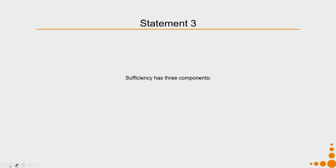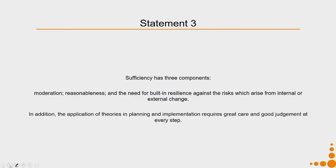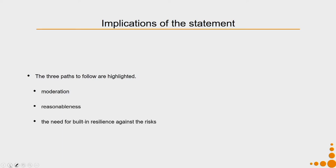Statement three says: sufficiency has three components — first, moderation; second, reasonableness; and third, the need for built-in resilience against the risks which arise from internal or external changes. In addition, the application of theories in planning and implementation requires great care and good judgment at every step. The three paths to follow are moderation, reasonableness, and the need for built-in resilience against risk.